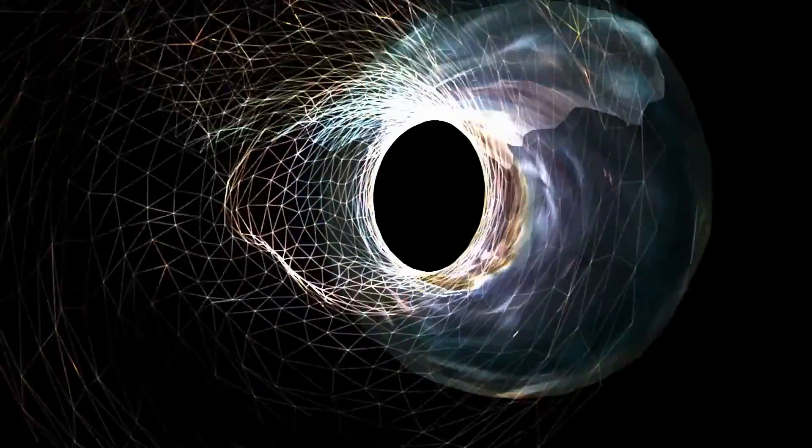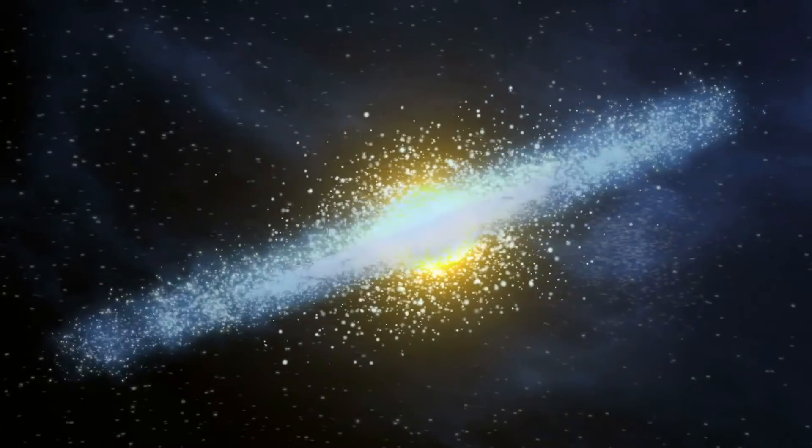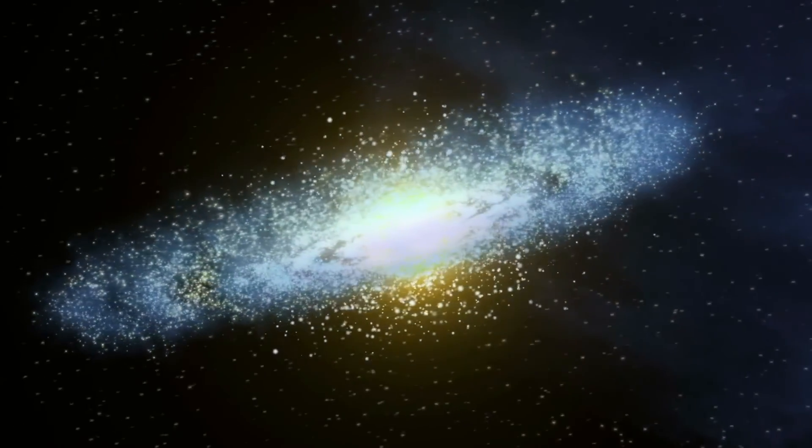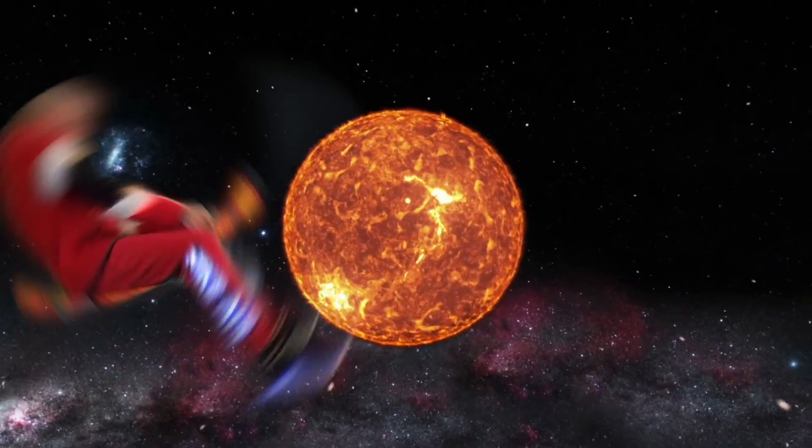Black holes are invisible, you can only see them when the gases get super hot and move around it, that's called an accretion disk. Now picture this.